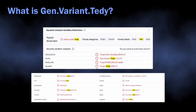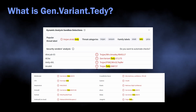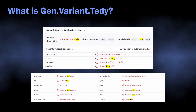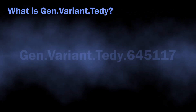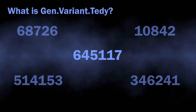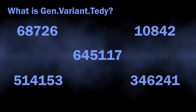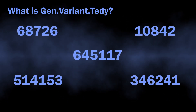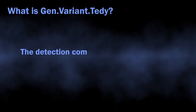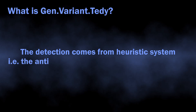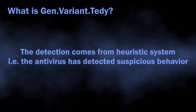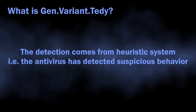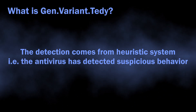This specific name is used by a selection of antivirus software including Windows Defender, Clam AV, eScan, and a lot of others. The numeric suffix at the end is just an ID with not a lot of meaning behind it. The detection itself is a product of a heuristic detection system, and that is an important detail we will get back to later.